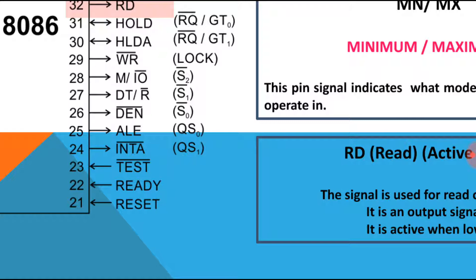Regarding interrupt: whenever there is a request from an external device, the processor accepts the request and gives an acknowledgement through the interrupt acknowledge signal, indicating the request has been accepted.